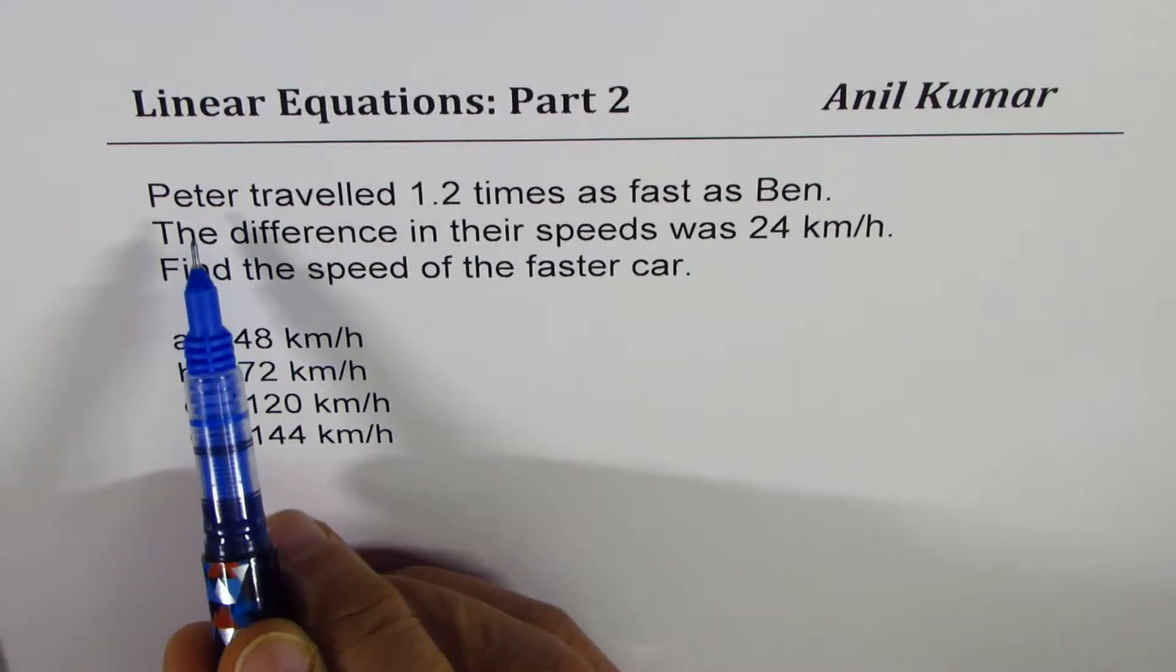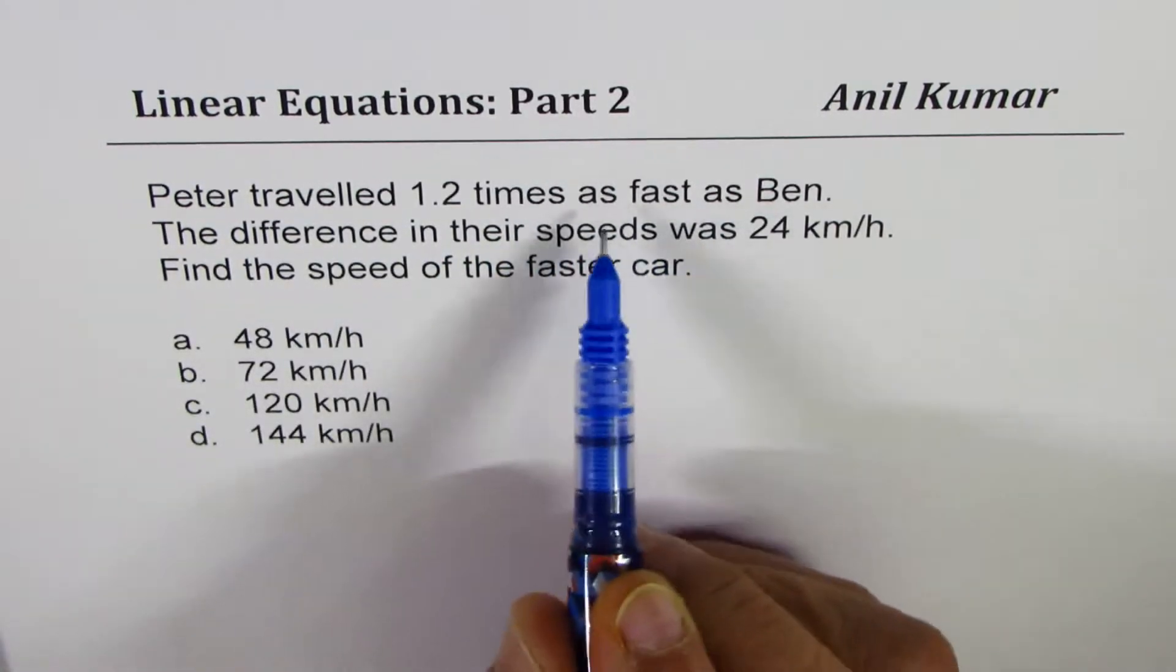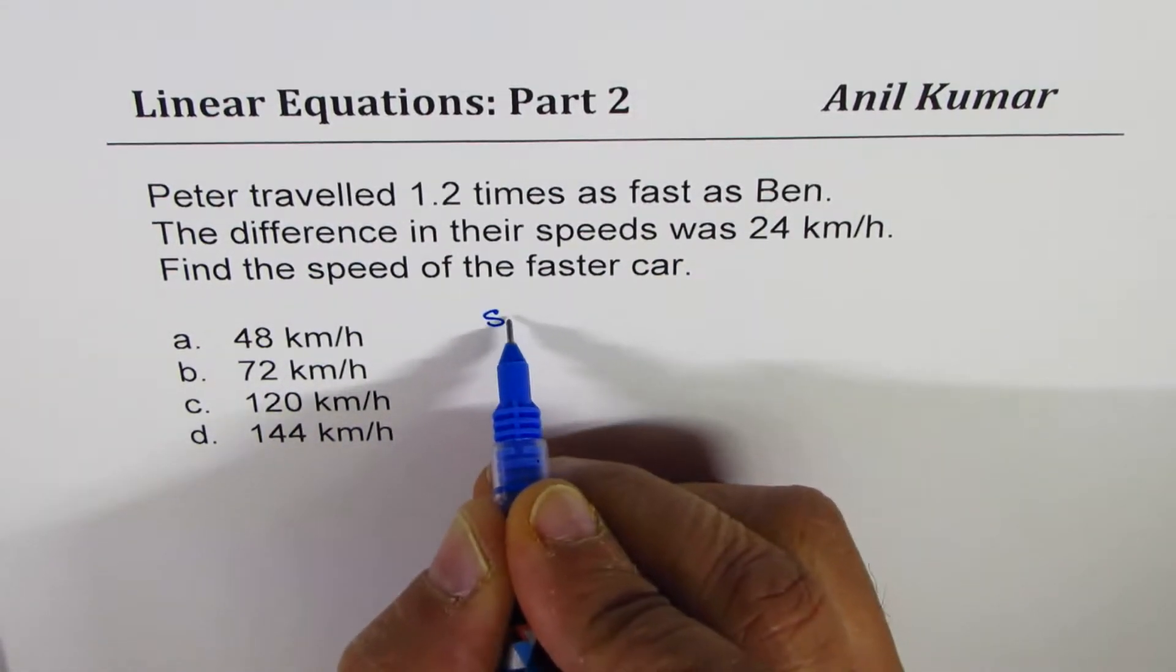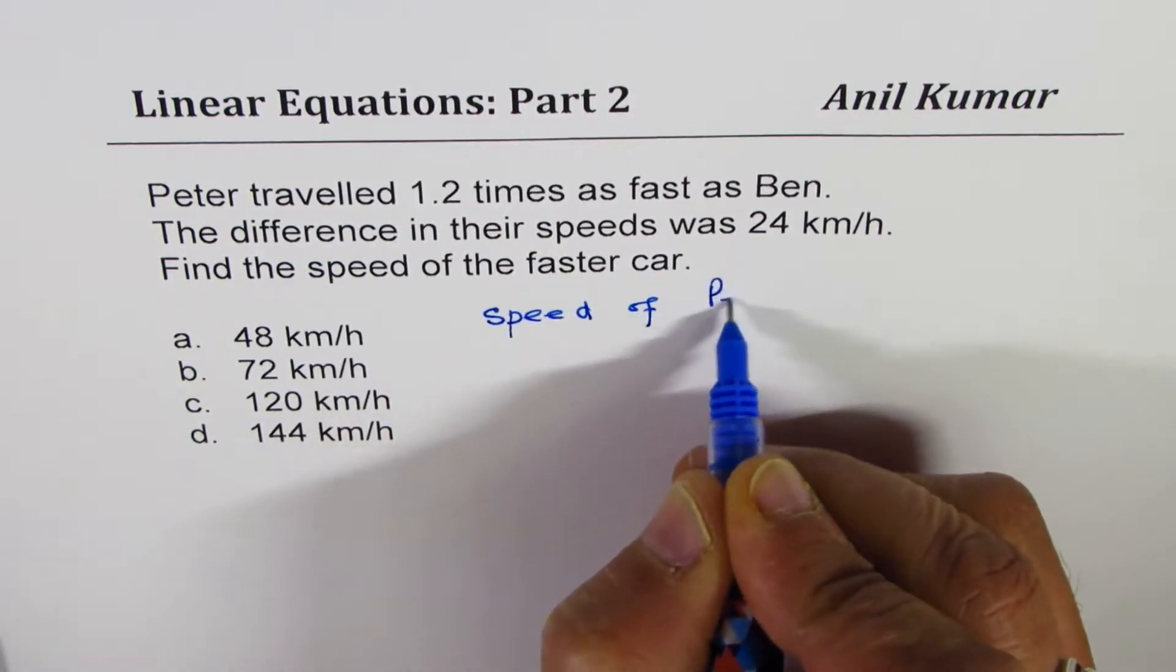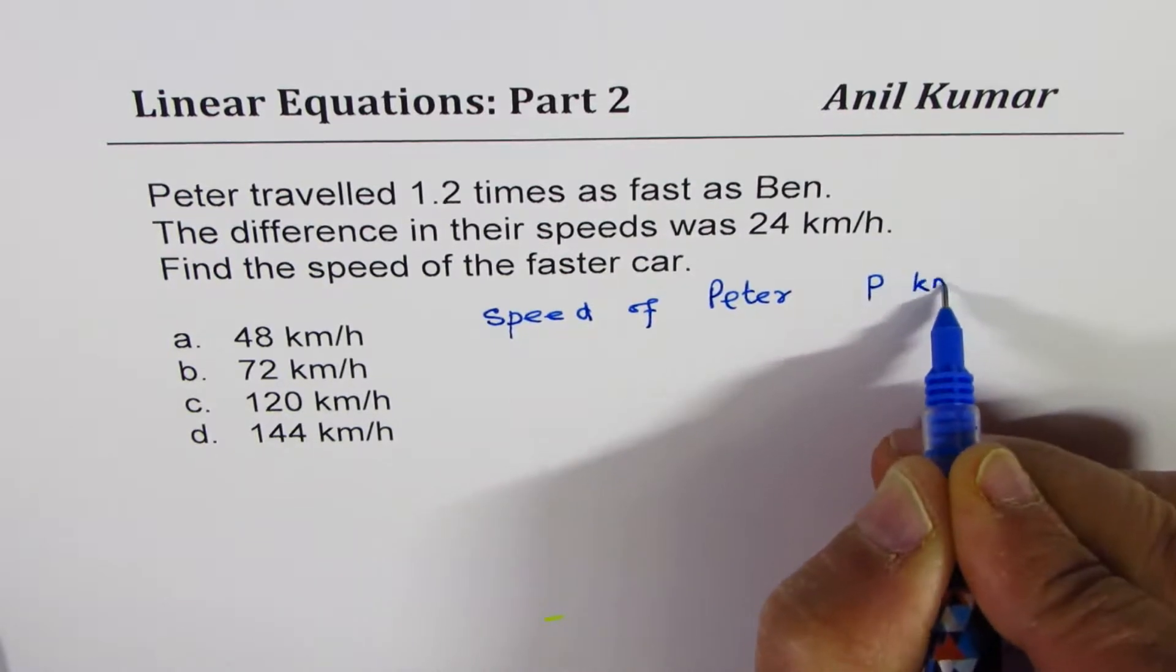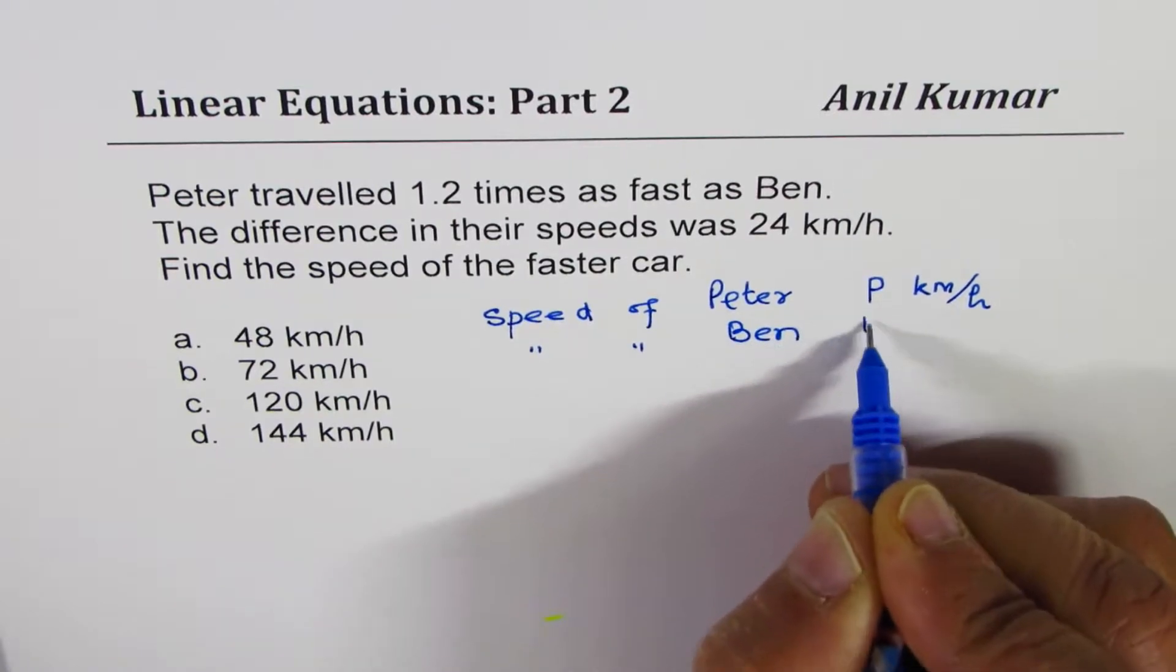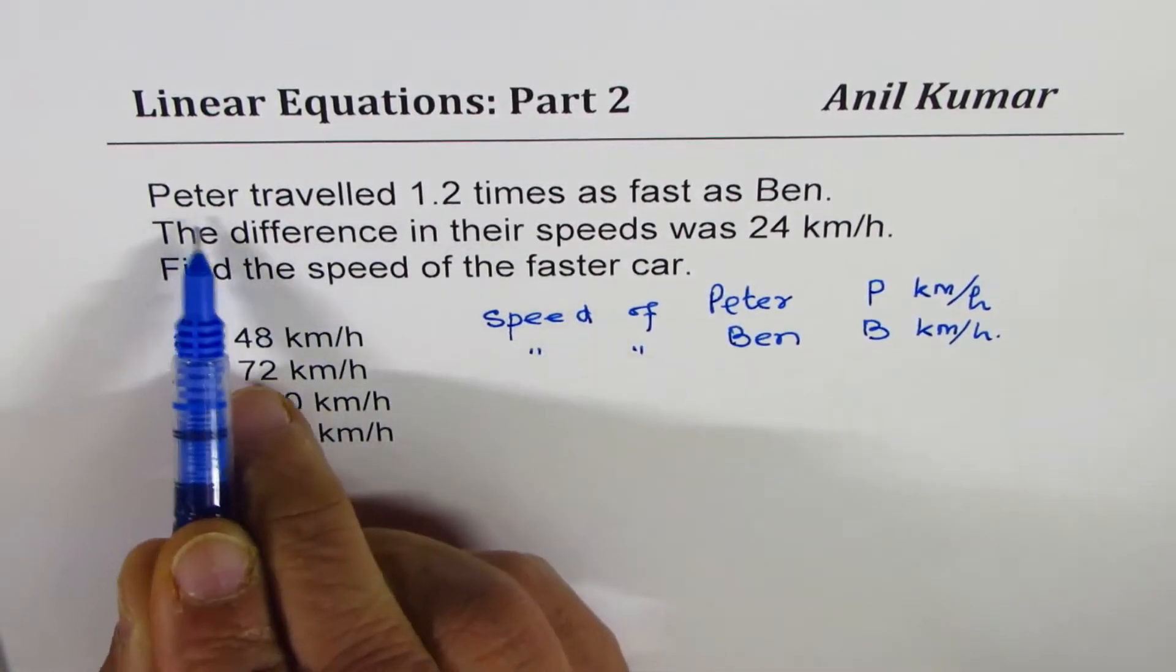Let's define variables. Peter traveled 1.2 times as fast as Ben. Let speed of Peter be p. We say speed of Peter is p km per hour and speed of Ben is b km per hour.